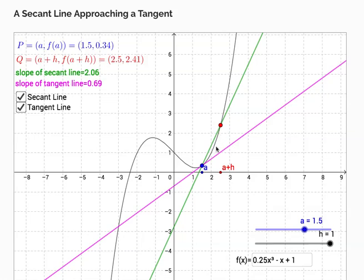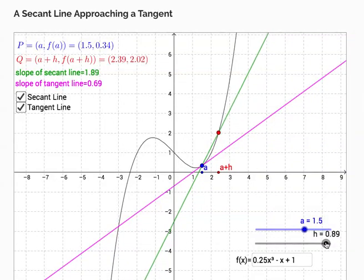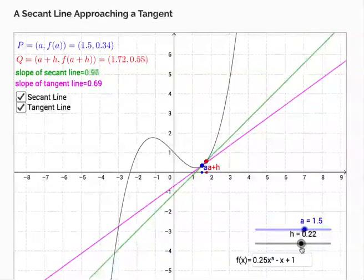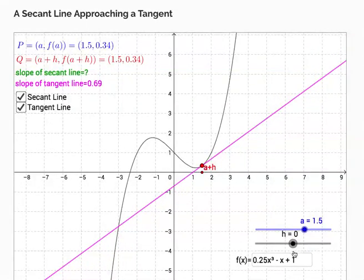The slope of that secant line approaches the slope of the tangent. Basically that's just the overall idea of the limit process. I almost had it right there.